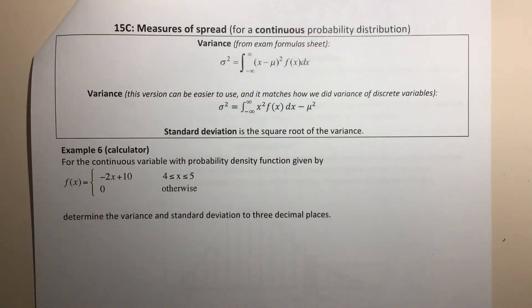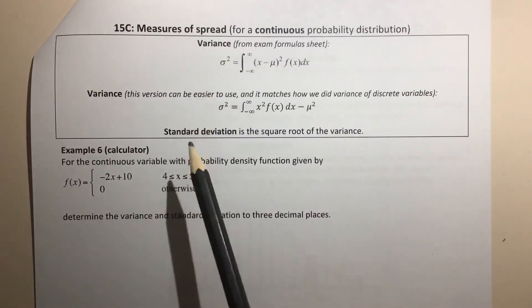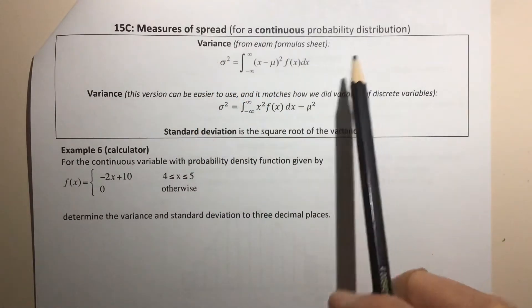G'day there method students. In this video we're going to look at 15C, which is measures of spread, essentially focusing on the variance and the standard deviation for continuous probability distributions.